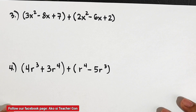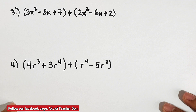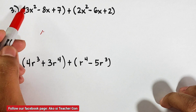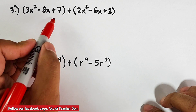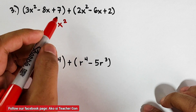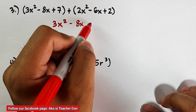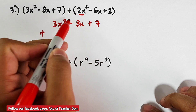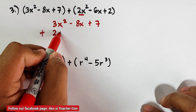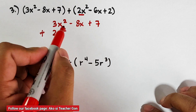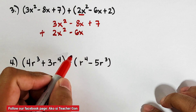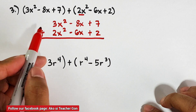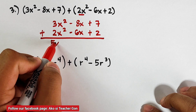For item number 3, we are given: (3x² − 8x + 7) + (2x² − 6x + 2). We copy the first polynomial: 3x² − 8x + 7. Then the second polynomial is aligned under it: 2x² is aligned under 3x², −6x under −8x, and +2 under +7. Adding: 3x² + 2x² = 5x².